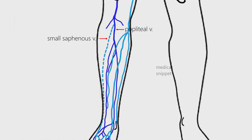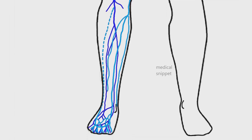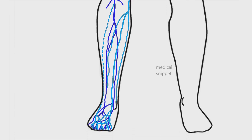There are many perforators connecting the superficial veins to deep veins. They drain blood from the superficial system to the deep system, but we will discuss only the important ones. In the foot, the perforators are unique, as they drain blood from the deep to the superficial system.